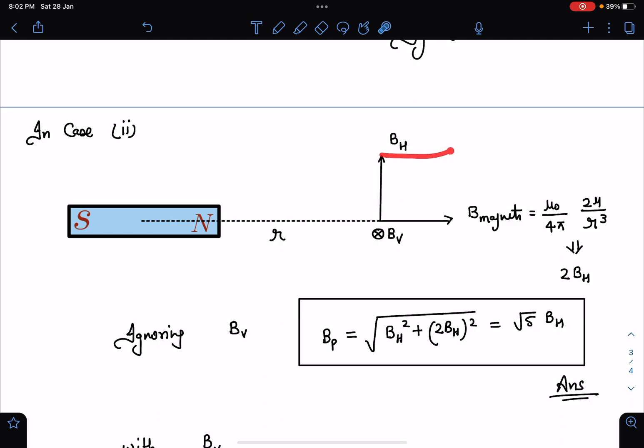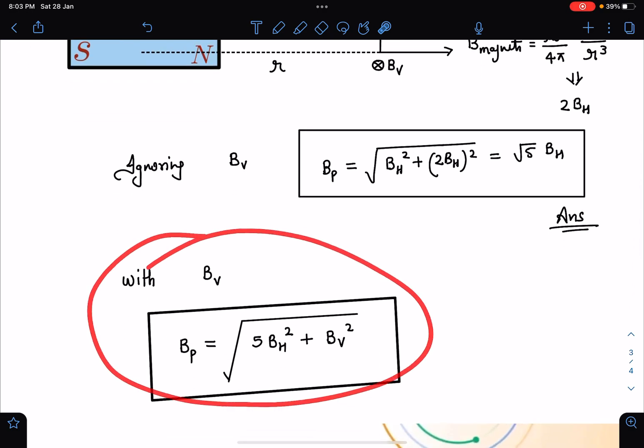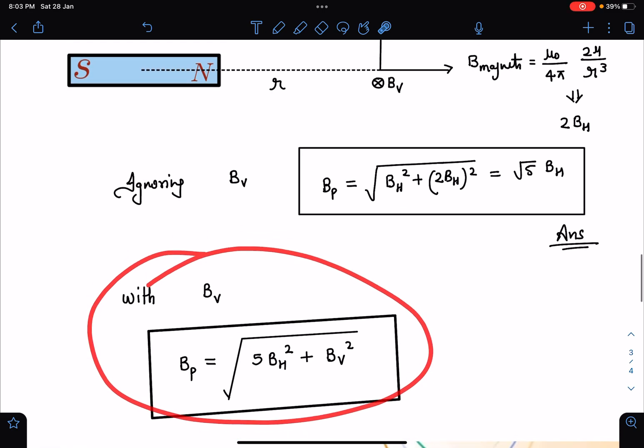So net magnetic field at this particular point will become resultant of these two. So BH square plus 2 BH whole square, which will give us an answer as root 5 BH. But suppose if I have to answer net magnetic field, then in my opinion, the correct answer should have been BP is equal to this magnetic field in the plane. And BV is perpendicular to this.